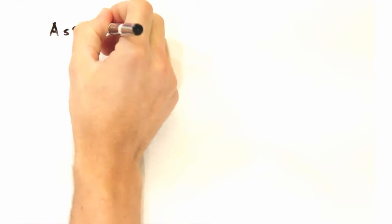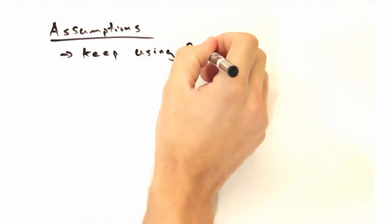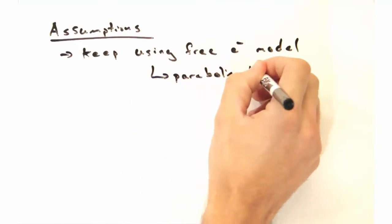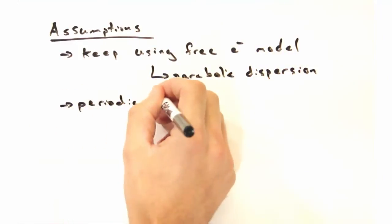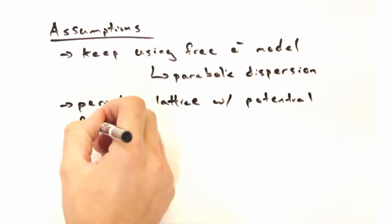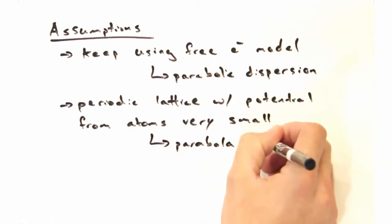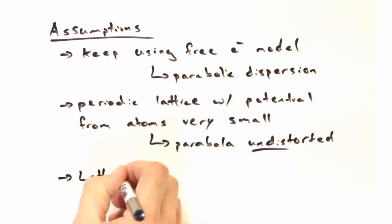Okay Nicole, what assumptions do you want to make? So it's safe to say we're going to keep using the free electron model, so we can keep that parabolic dispersion. I'd also like to invoke a periodic lattice like we did with Bloch, but let's make the potential from our atoms very small so we have no band gaps.